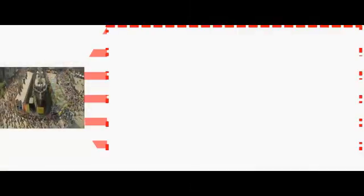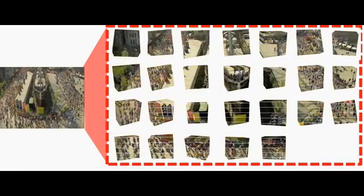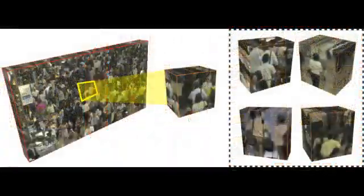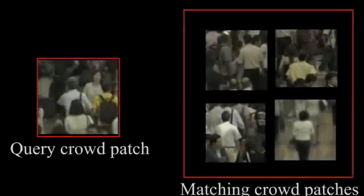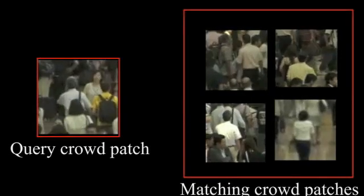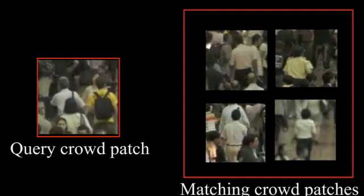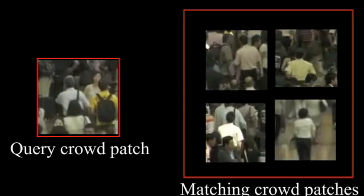Here we see the query video on the left and matching crowded scenes on the right. We then use this subset of videos to find matching crowd patches. The idea is that the input video can then be explained as a combination of crowd patches from other videos, allowing us to transfer learned patterns of crowd behavior from videos in the database. Here we see a query crowd patch on the left and matching crowd patches on the right.